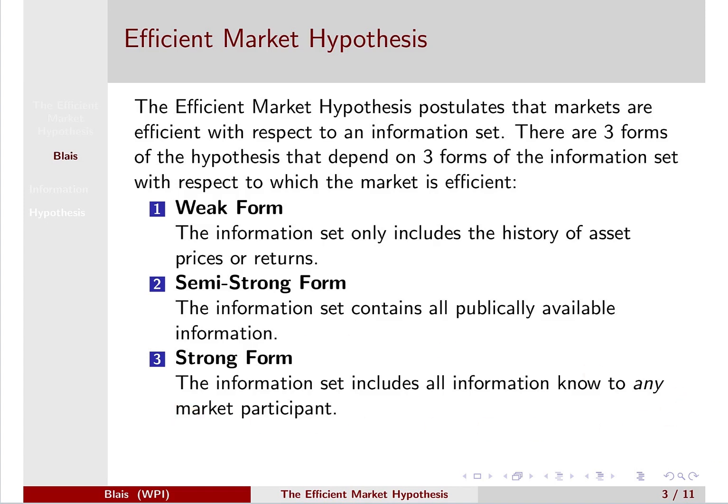The strong form is really there more for completeness — it's not really realistic. It's also important to recognize that this is a hypothesis, not a theorem. It's a hypothesis that you may choose to believe or not for each of its forms. People may believe different forms for different markets or may not believe it at all for certain markets. For instance, the semi-strong form — that all publicly available information is priced in while privately held information is not — is reasonable for the stock market.